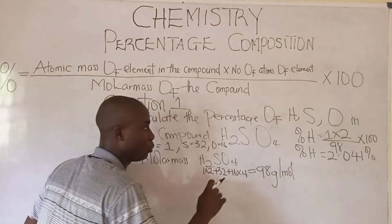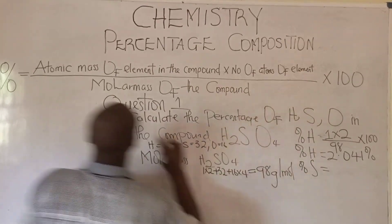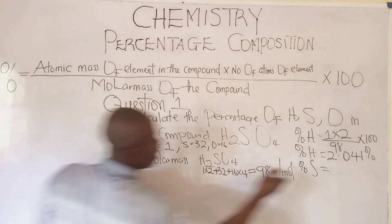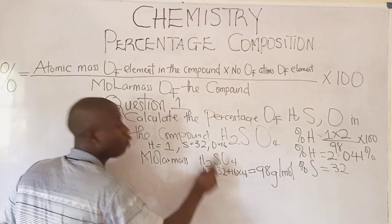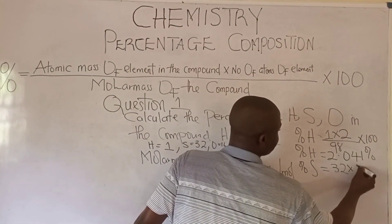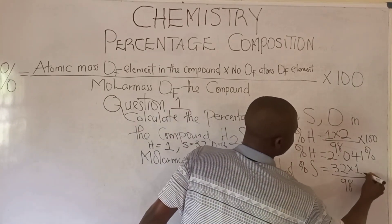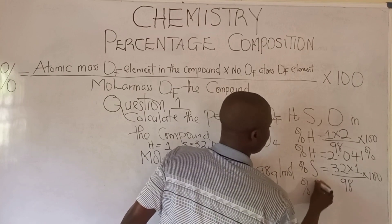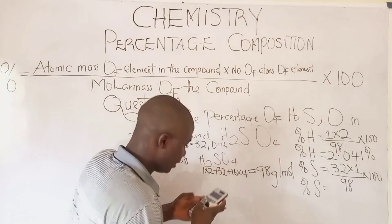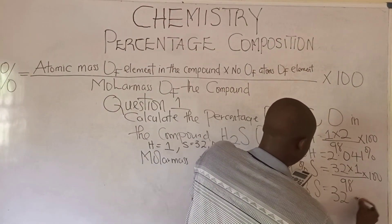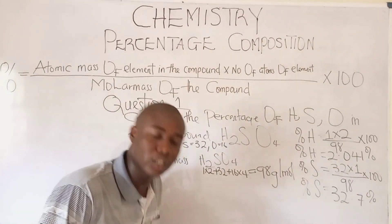Now let's go ahead and solve for the percentage composition of sulfur in this compound. Percentage composition of sulfur: atomic mass of sulfur is 32, times the number of atoms of sulfur in the compound which is 1, over the molar mass 98, times 100. That gives us 32 over 98 times 100, which is 32.7%. That is the percentage composition of sulfur in H2SO4.